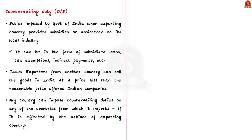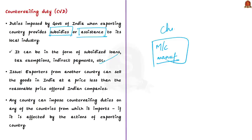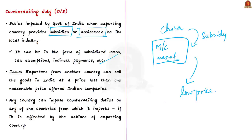Countervailing duties are imposed by the Government of India when it finds that a government in the exporting country provides subsidies or assistance to its local industry — in the form of subsidized loans, tax exemptions, indirect payments, etc. For example, if China exports machinery to India and the Chinese authorities provide subsidies to domestic machinery manufacturers, the Chinese machinery costs less and can be sold in India for far less than Indian companies can reasonably offer. Since Indian manufacturers did not receive similar subsidies, Indian products become costlier. To neutralize the adverse effects of such subsidies, countervailing duties are imposed, making prices of the two machineries similar.